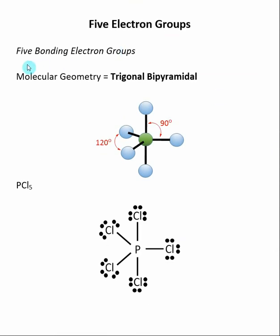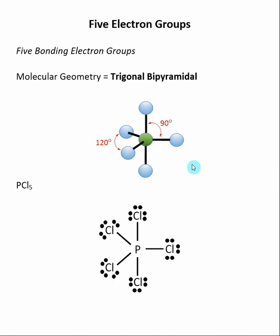When we have five groups of electrons and all five are bonding, we have a molecular geometry of trigonal bipyramidal. The example is PCl5, where phosphorus has five bonding groups. It's called trigonal bipyramidal because the three central atoms form a triangle in the same plane, and there are points on either end — forming a pyramid on each side. This geometry has two different bond angles: the bond angles between the atoms in the center plane are 120 degrees, and the bond angles between the axial points and the central atoms are 90 degrees.